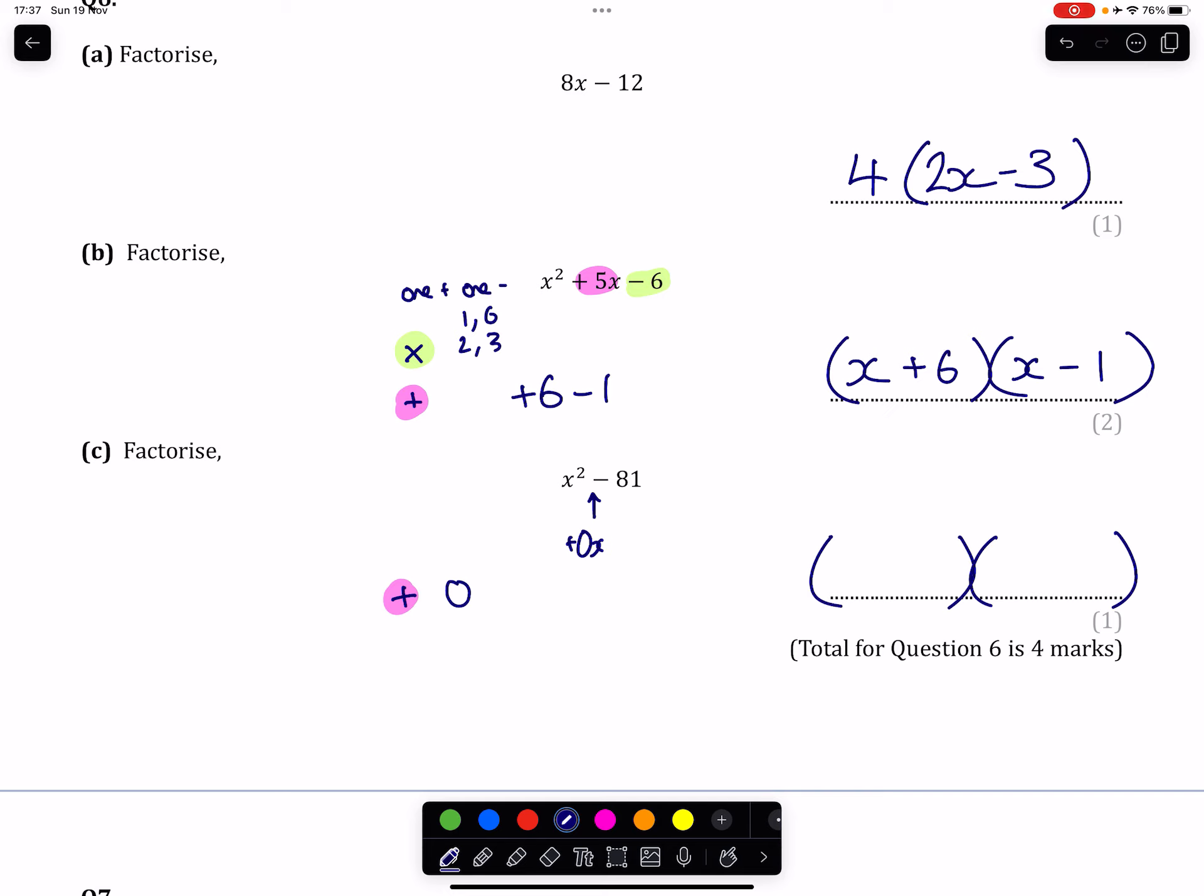And when you have this 0x term and you're being asked to factorize, what you're also going to have is that you will have a subtraction. You'll have a difference. You're going to have two terms only because of the fact that there's no x middle term.